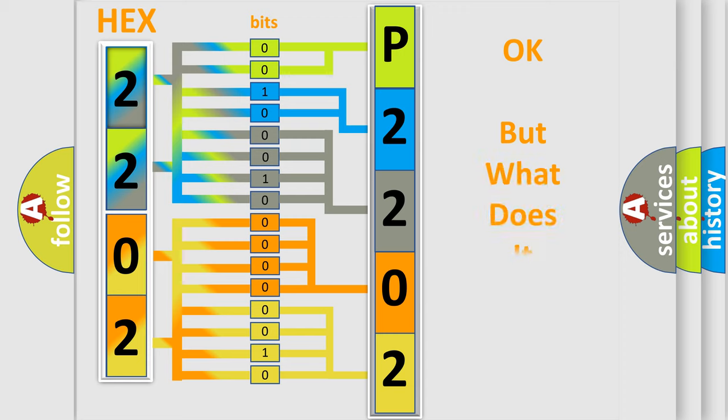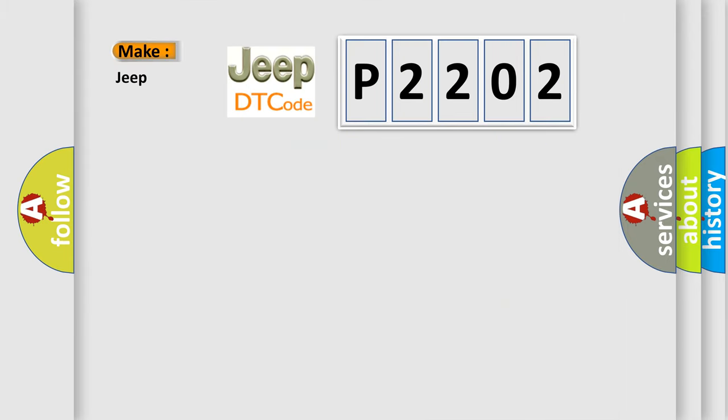We now know how the diagnostic tool translates the received information into a more comprehensible format. The number itself doesn't make sense unless we can assign information about what it actually expresses. So, what does the diagnostic trouble code P2202 interpret specifically for Jeep car manufacturers?